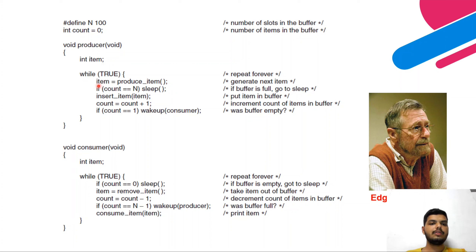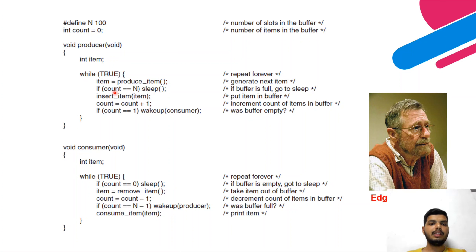Let us understand the producer process first. The producer runs in an infinite while loop, since production is a continuous process. The first line — 'item = produce_item()' — generates the next item. Then it checks: if the buffer is full (count equals the buffer size), the producer goes to sleep because there are no slots remaining. If the buffer has free slots, it inserts the item and increments the count variable.